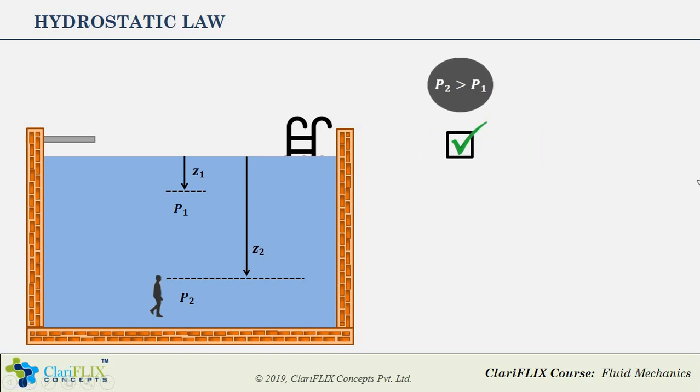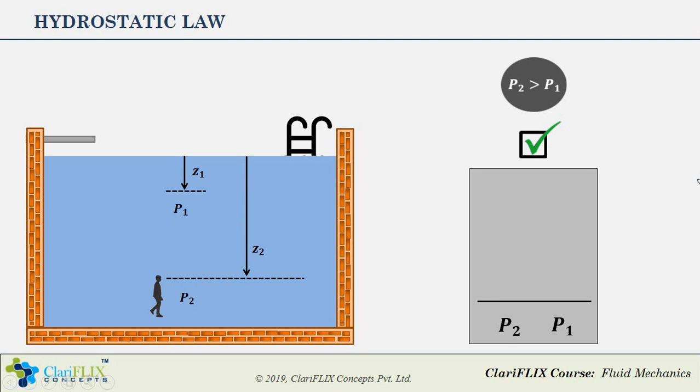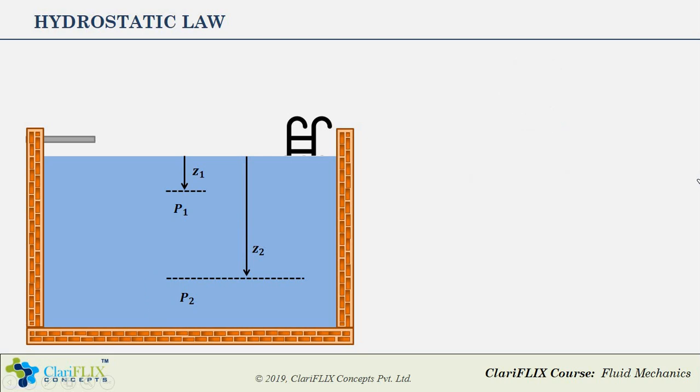So the question is, how much greater is P2 in comparison to P1? Let us find an answer to this. Imagine a cylindrical shaped fluid element with cross-sectional area A and height h. Since the entire water in this pool is at rest, it is in equilibrium, and therefore this cylindrical element of water is also in equilibrium state.